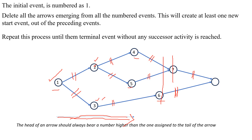Next, the last one — the end event — I give the number 8. Here I have to check once again: the head of an arrow should always bear a number higher than the one assigned to the tail of the event. We once again cross-check that the head event should always have a higher number than the tail event in the respective activities.